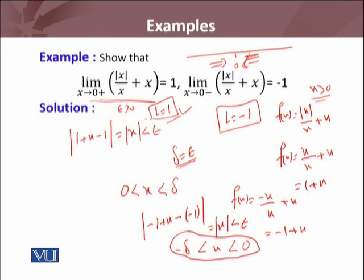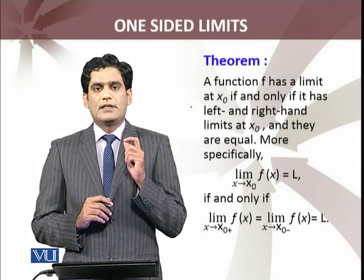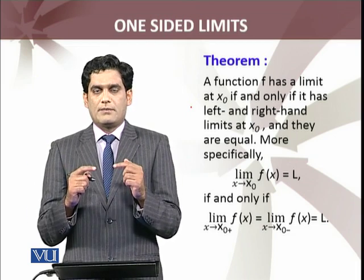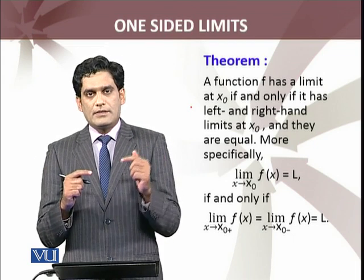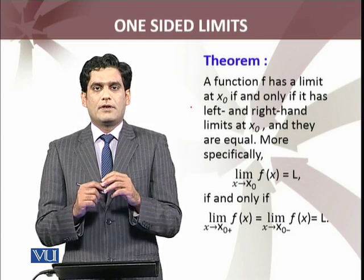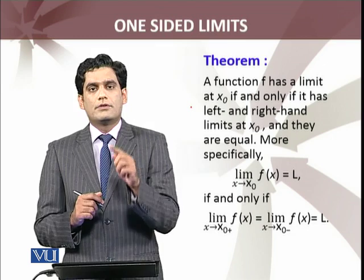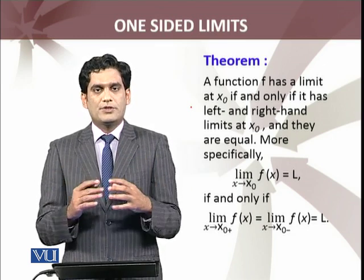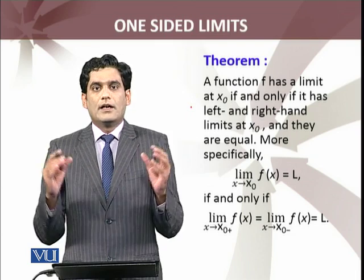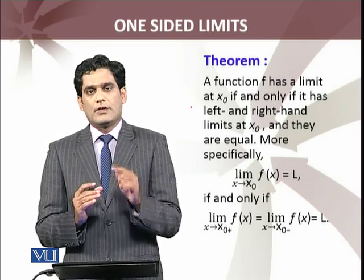So in both examples, we have the same function but approaching from different sides gives two different limits: the left-sided limit is −1, and the right-sided limit is 1. Now the theorem — which I also mentioned informally before — states that for a real-valued function, the limit exists as x approaches x₀ if and only if both the left-sided limit and the right-sided limit exist and are equal to the same real number L. Then we say the limit of that function as x→x₀ exists and equals L. So one-sided limits are for functions whose overall limit does not exist, but whose sided limits do exist.